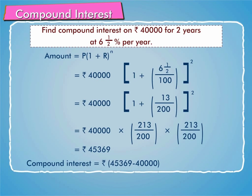Therefore, compound interest is equal to rupees 45,369 minus 40,000, which is equal to rupees 5,369.